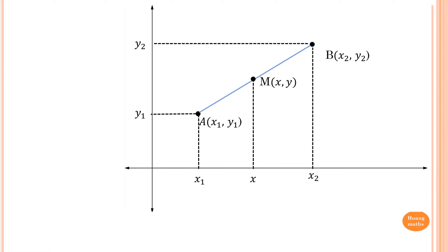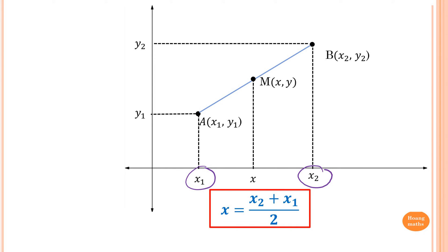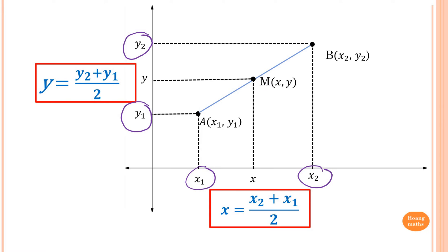To find x, we just add x1 and x2 and divide by 2 — we find the average of the two x values. So x equals (x2 + x1) / 2. For the y value, same thing: we find the average of y2 and y1, so y equals (y2 + y1) / 2. Putting them together, the midpoint M is ((x2 + x1)/2, (y2 + y1)/2).